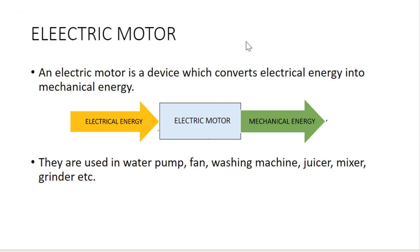Electric motor means energy conversion. Electric motor is a device which converts electrical energy to mechanical energy. You already know conservation of energy — energy can be converted from one form to another form. Input is electrical energy, output is mechanical energy. Electric motor is that device.